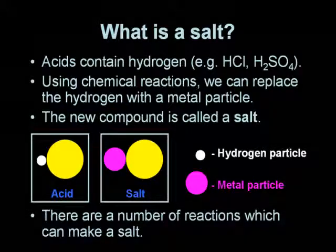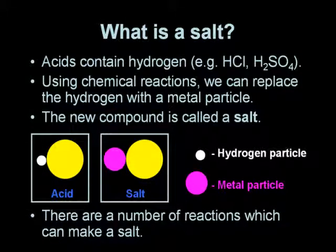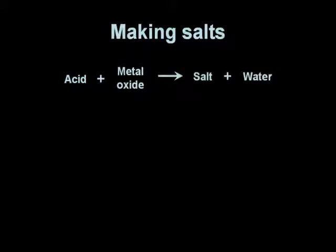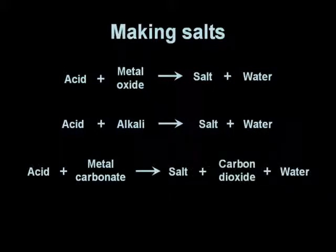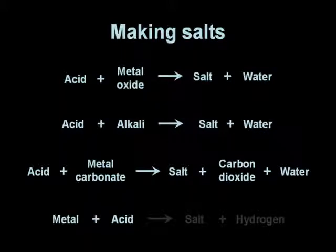There are a number of reactions which can make salts. Examples of reactions which make salts include reacting an acid with a metal oxide, which produces a salt and water. You can also react an acid and an alkali, which also produces salt and water. Acids react with metal carbonates to form a salt, carbon dioxide and water. And the final example is a metal plus acid, forming salt plus hydrogen.